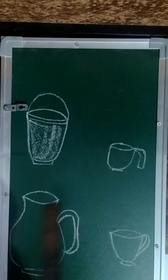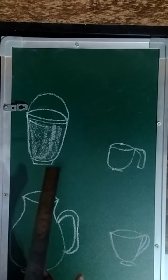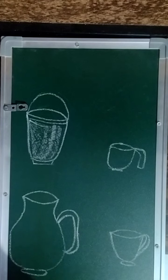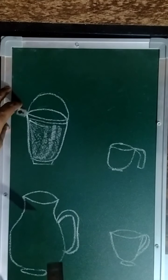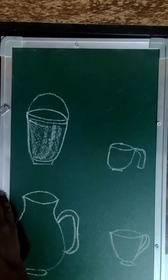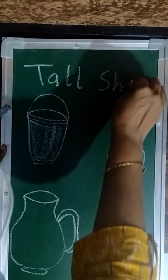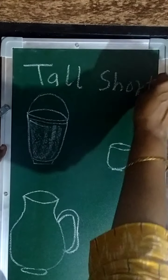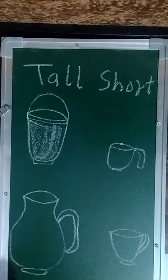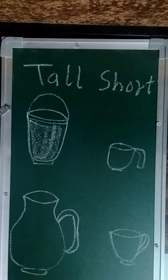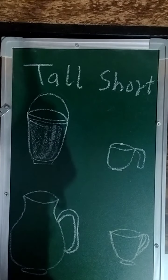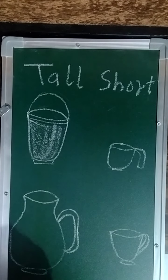Look at these pictures — this is bucket, this is mug. Which one is tall? Yes, this is tall, this is short. Mug is short and bucket is tall. Now you can see what is tall and short.